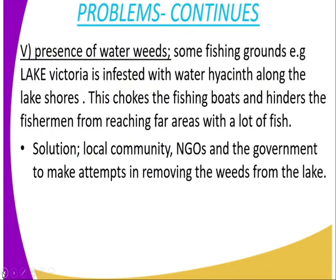Number five is the presence of weeds. Some fishing grounds, especially Lake Victoria, are infested with water hyacinth along the lake shores. This chokes fishing boats and hinders fishermen from reaching areas with a lot of fish. The solution is that local communities, NGOs — non-governmental organizations — and the government should make attempts to remove the weeds from the lake.